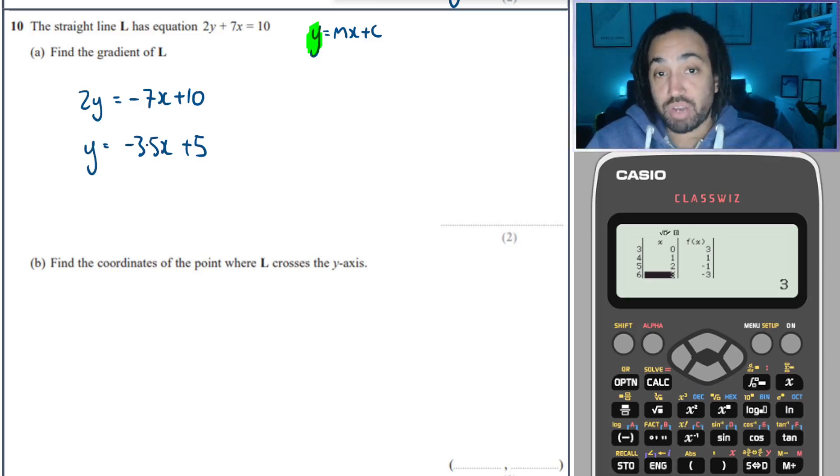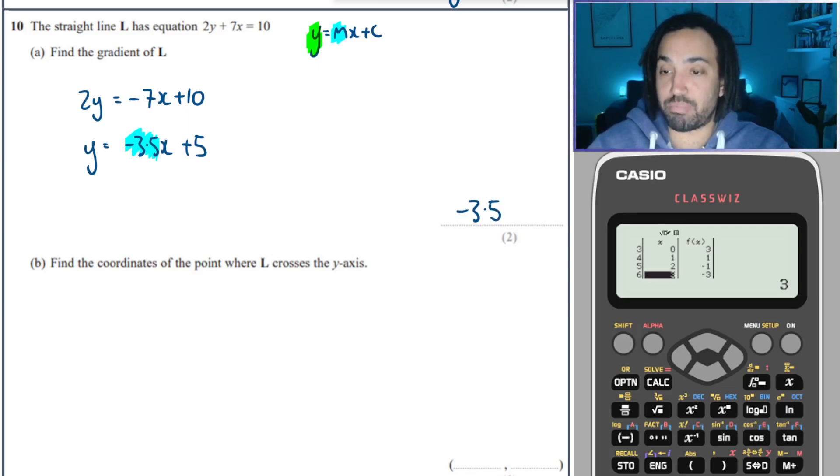So the gradient of the line, remember, is the m part of the equation, and it's minus 3.5. Now, the biggest mistake I see time and time again is that people write minus 3.5x. That's not correct. It has to be just minus 3.5. You won't get the marks if you write x there, because that is actually a completely different thing.